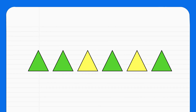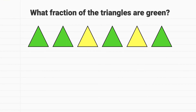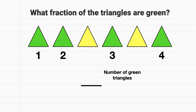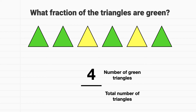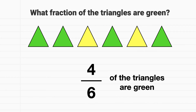Now it's time for you to practice on your own. What fraction of these triangles are green? The numerator of the fraction is the number of green triangles. We can see there's 1, 2, 3, 4 green triangles, so the numerator is 4. The denominator will be the total number of triangles. There's a total of 1, 2, 3, 4, 5, 6 triangles, so the denominator of this fraction is 6. Therefore, 4 sixths of these triangles are green.